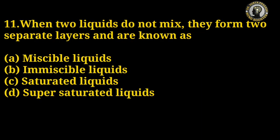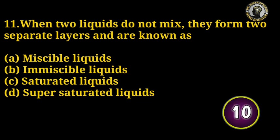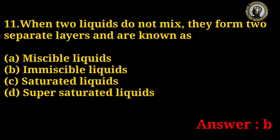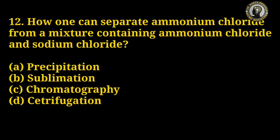Question number 11: When two liquids do not mix, they form two separate layers and are known as what? Options: miscible liquid, immiscible liquid, saturated liquid, supersaturated liquid. The right answer is B — immiscible liquid.